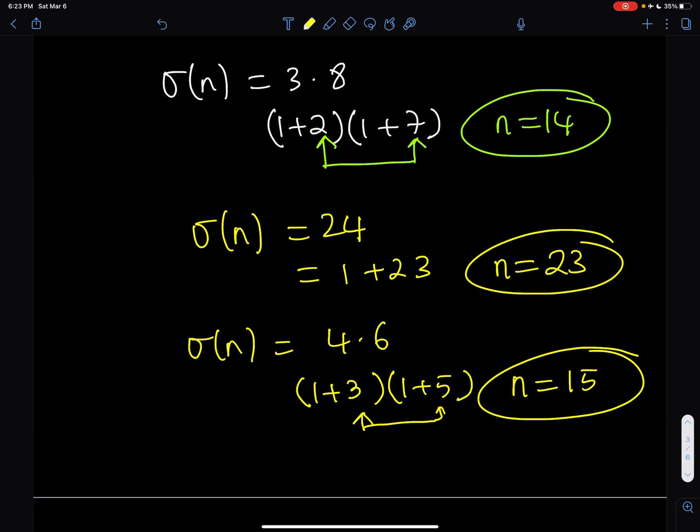To keep a long story short, there are three solutions to this equation where the sigma of n is equal to 24. Our number can be 14, 15, or 23. That brings us to the end of this video. Thank you for watching. I hope you enjoyed the video. Please like, comment, and subscribe. I'll see you tomorrow with another video. Until then, be safe, take care, and bye bye.